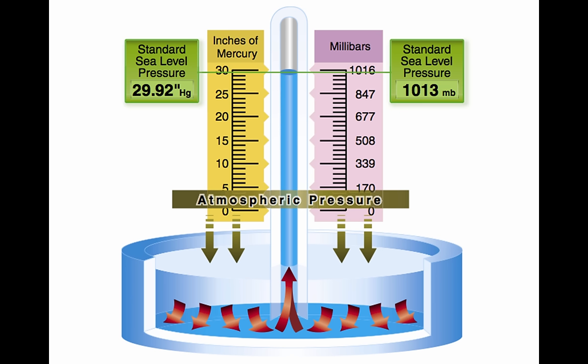As air becomes less dense, it reduces power because the engine takes in less air, thrust because the propeller is less efficient in thin air, and lift because the thin air exerts less force on the airfoils. The pressure of the atmosphere varies with time and altitude. Due to the changing atmospheric pressure, a standard reference was developed. The standard atmosphere at sea level is a surface temperature of 59 degrees Fahrenheit, or 15 degrees Celsius, and a surface pressure of 29.92 inches of mercury, or 1013.2 millibars.